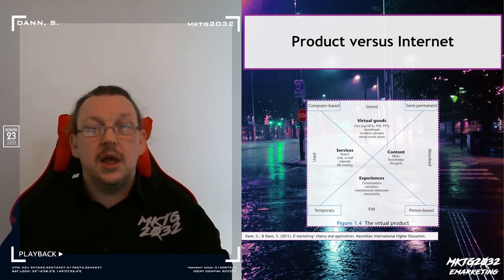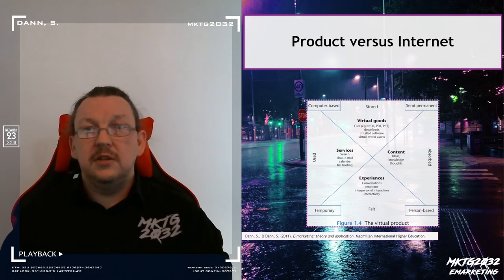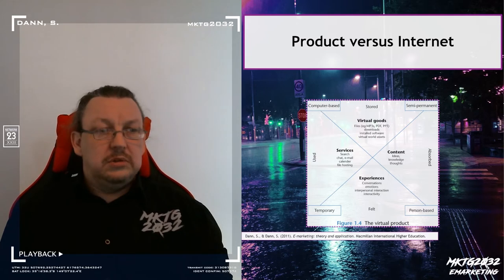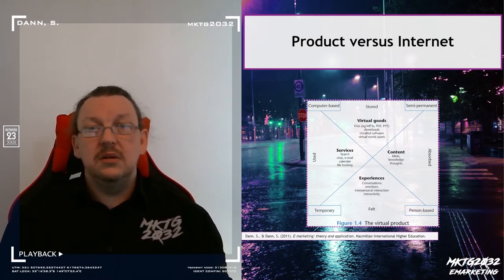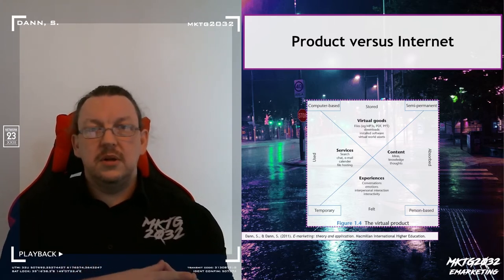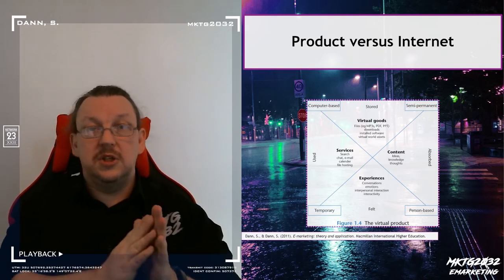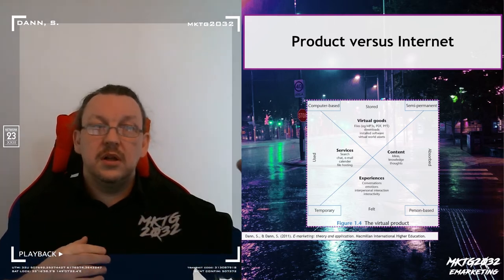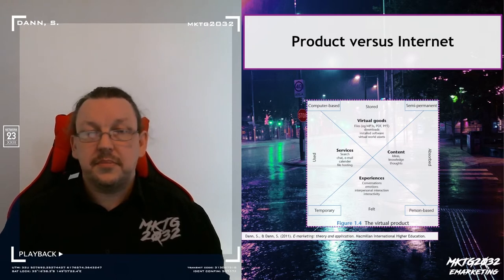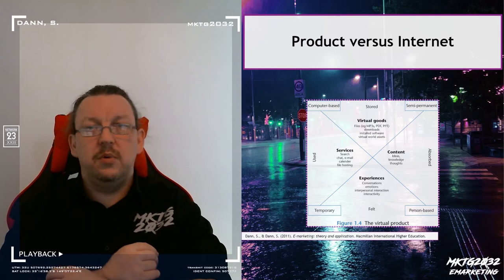The next area — and this will come up a lot when we talk about value, distribution, and the product concept — is the internet-based product concept from the eMarketing textbook. It's a 2011 text, so a lot has changed, but some fundamentals still hold. The internet-based product is a combination of factors that are either temporary or semi-permanent, and it's a spectrum. It's either a person-based experience that is transformative to you, or it involves a transformative effect on data or software — so it's computer-based.